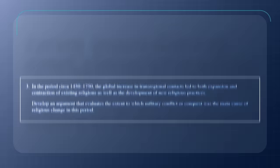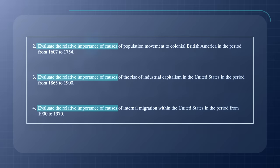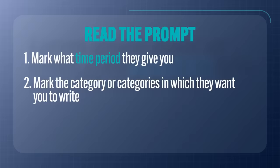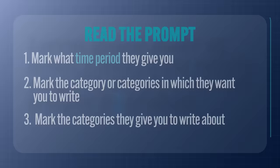The second thing to mark is the historical thinking skill they want you to write with. For example, if they explicitly mention causation, your essay needs to be a causation essay. Sometimes the AP overlords like to confuse you — look at the 2022 APUSH prompts, where they want you to evaluate the relative importance of causes, which is really a comparison essay. Mark the historical thinking skill because it needs to frame your essay. Third, mark the categories they give you to write about, such as comparing economic versus social or political developments.